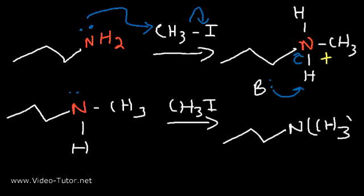Once all of the hydrogens are gone and nitrogen is bonded to four carbon atoms, we can proceed with the next step. It's going to be complexed with an iodide ion, and we need a negative charge to balance the positive charge of the nitrogen.